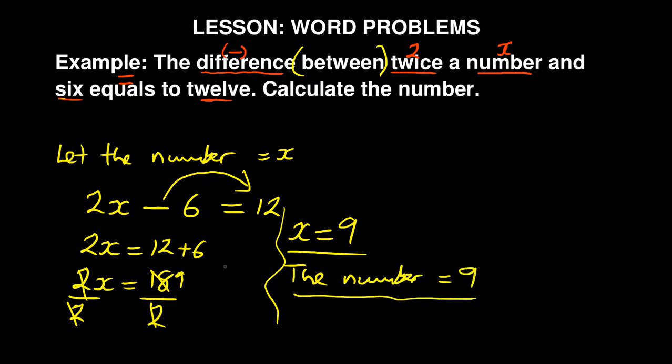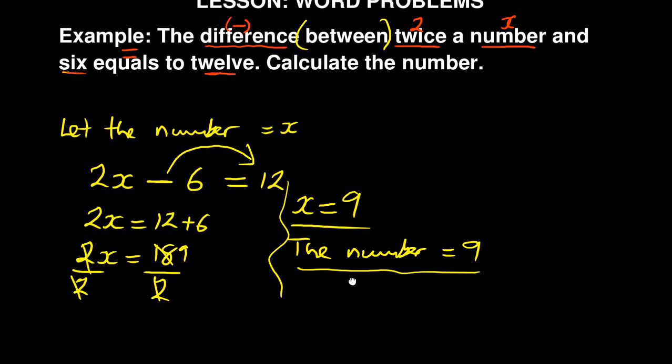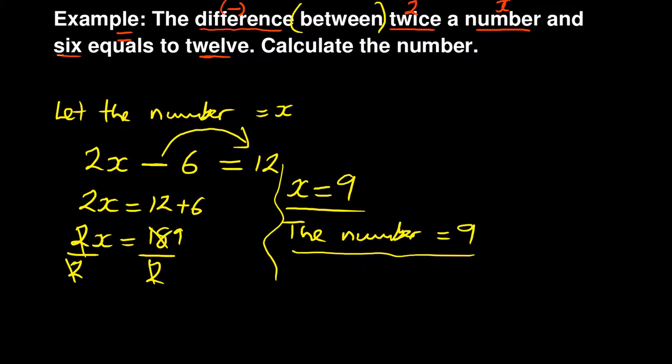So that is that. You can actually check if you solved your answer correctly by proving. What you do is you can take this 2x and say 2x minus 6 is equal to 12. Now you know your x is 9, so you'll have 2 times 9 minus 6 is equal to 12.